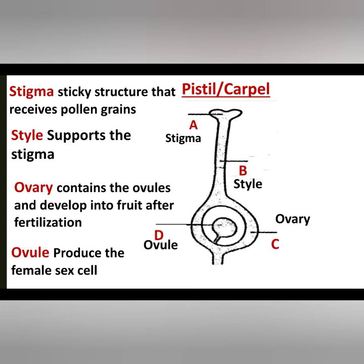A group of pistils is known as the gynoecium. So whenever you have a group of pistils — either two, three, or more — they are called the gynoecium.